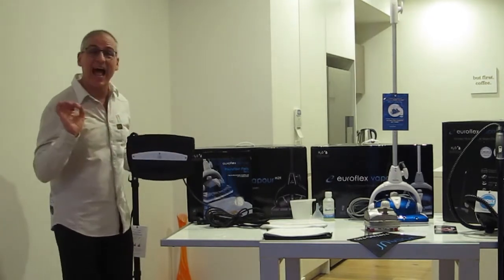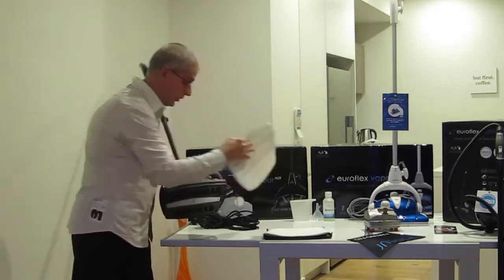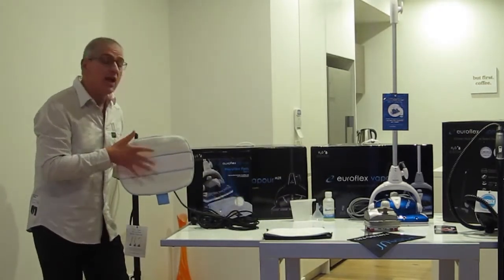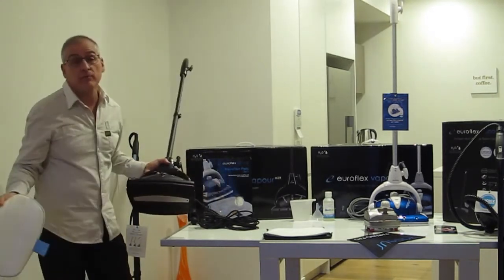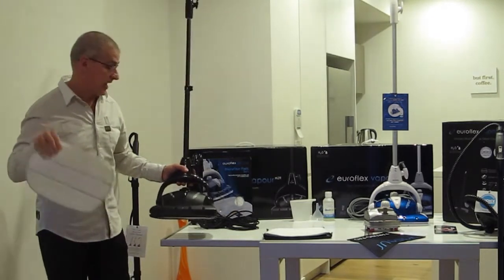What we've also done with our upright models is that we've put a hot plate on the bottom. Now, what that hot plate does is it acts as a heat booster, and it works in conjunction with the boiler, and it provides extra heat to the bottom of the pad. The higher the heat, the faster the cleaning, and you get better cleaning performance and a much better streak-free finish every time.